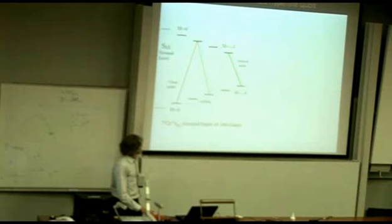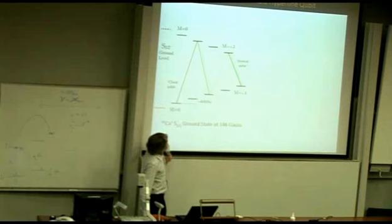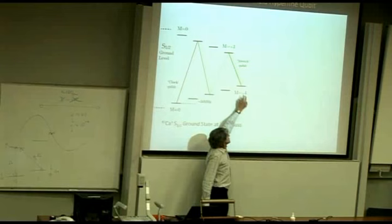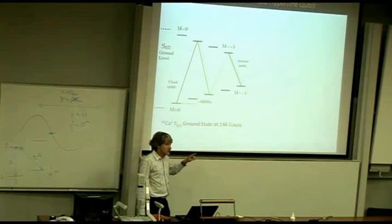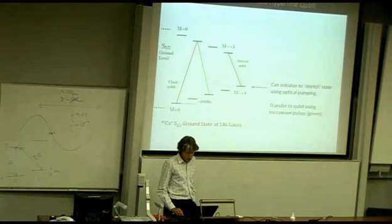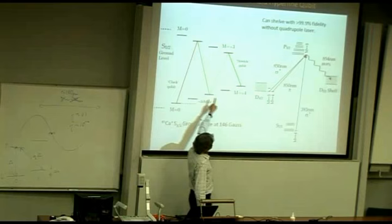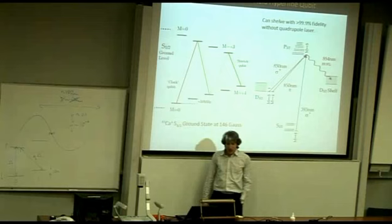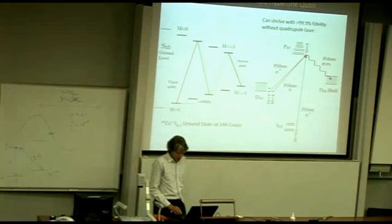The next thing was to find this magic field-independent transition. We know from theory that it occurs around 146 gauss. We varied the field around this field-independent point and zoomed in experimentally on the hertz scale, clearly seeing a parabolic dependence of the qubit frequency on magnetic field. At this point, we have fantastic precision and the necessary field independence. The state preparation uses optical pumping to the m equals 0 state, then three microwave pi pulses to transfer population to the qubit states, and readout transfers the qubit back via the same route. We can do this preparation better than 99.9% fidelity.